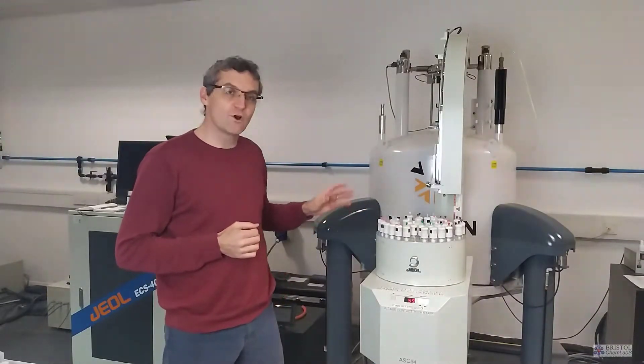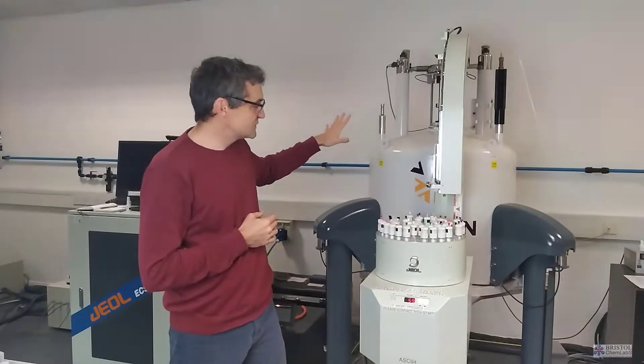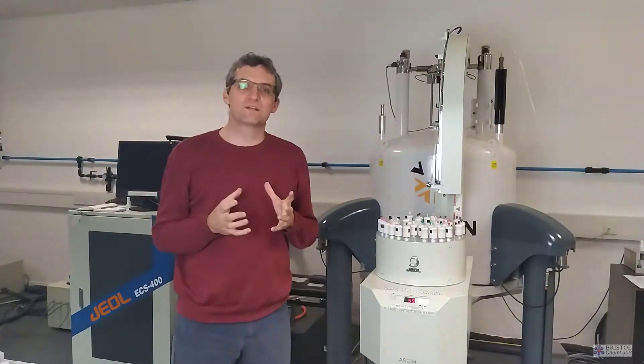When the sample's loaded onto the robot, it gets loaded into the NMR spectrometer and then this big can here is a magnet. It's a very large and strong superconducting magnet. A superconducting magnet is one which is permanently at field. It permanently has a very strong magnetic field.